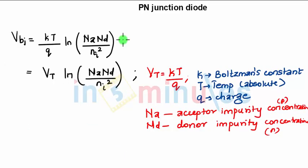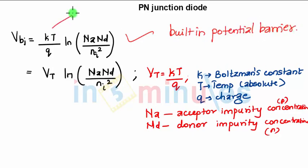You can see here, this is the formula to calculate the barrier potential V_bi. It is called as built-in potential barrier. Now how to calculate the value of built-in potential barrier is this formula which is kT by q natural log Na into Nd upon ni square, or you can see the intrinsic semiconductor concentration, where this part is replaced by VT.